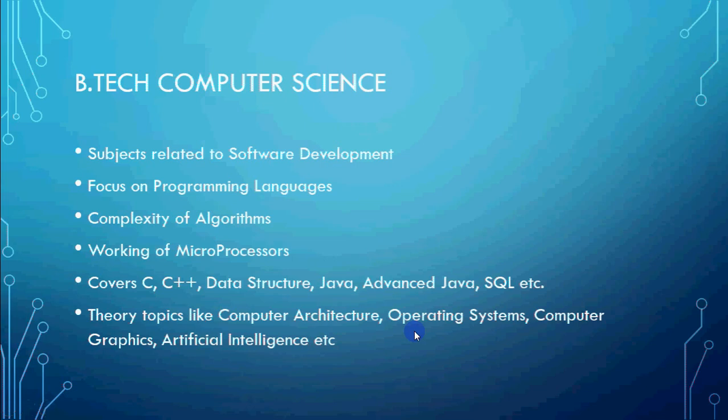Now we come back to our topic. Our topic was BTECH — Computer Science, IT and ECE — and what do you need to choose if you want a good job in an IT company. As I told you, the first preference is BTECH Computer Science. If you are getting a Computer Science stream, there is no better option than this. All the subjects you are learning are related to software development, and our main focus is how to develop software.